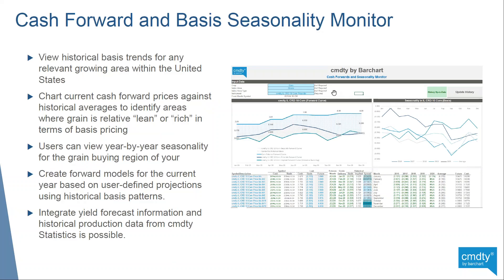What are some more advanced use cases? We've taken the liberty of building out a few templates for our users to get started. These are really designed to help people with very specific workflows do what they need to get done. Here's a cash forward and basis seasonality monitor — for any given area in the United States that grows grain, this template can help you calculate historical basis for a given month going back to 2016. This allows you to chart current forward cash prices against historical averages to see where grain is lean or rich in terms of basis pricing. On the right you'll see your year-by-year seasonality for grain buying in your region, and you can create forward models for the current year based on your own projections.